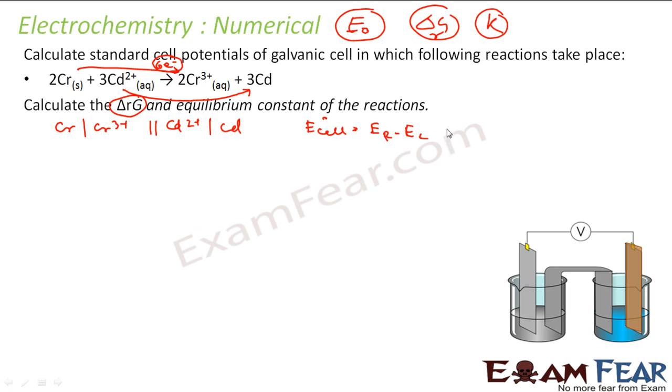E right is the reduction potential of cadmium 2+ to cadmium minus reduction potential of chromium 3+, that is Cr³⁺ to Cr. Please note it is Cr³⁺ to Cr, not Cr²⁺. Using the table we can see the value is 0.4 minus minus 0.74.